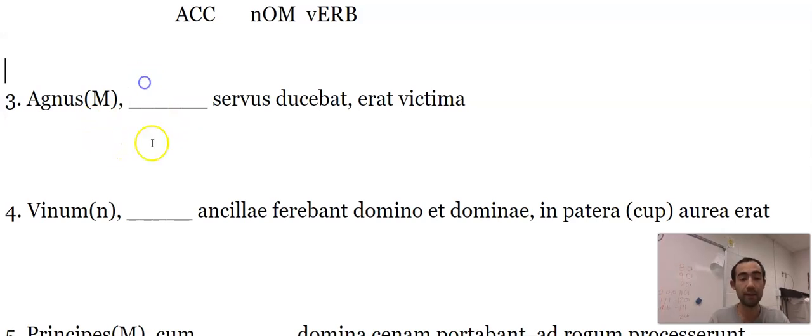Again, same deal. Servus is nominative. Here's our verb. This is going to be our direct object. Lamb, slave, was leading. Slave was leading the lamb. This has to be accusative here.